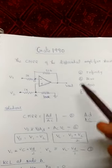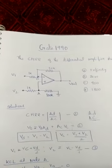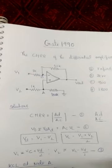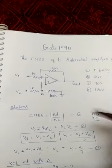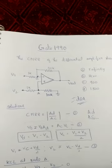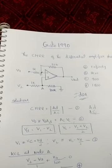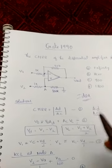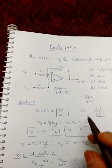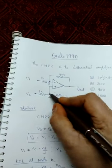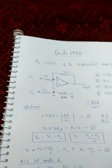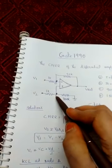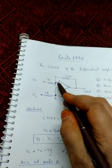In this problem we are considering the operational amplifier as an ideal case — it is not explicitly mentioned, but we can treat it as an ideal operational amplifier. An ideal operational amplifier has the characteristic that the open-loop gain is infinity. Because of that, we have the virtual ground concept, meaning the voltage at node A is equal to the voltage at the other node.